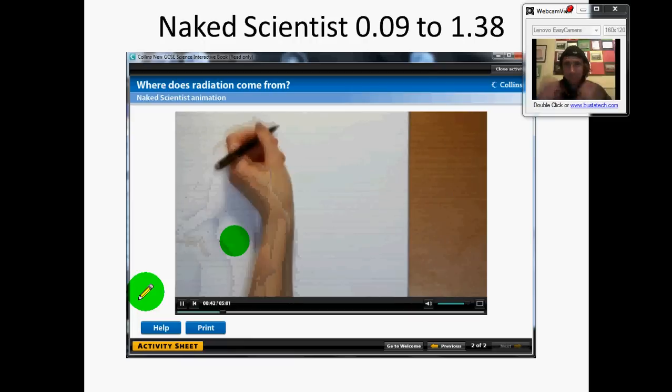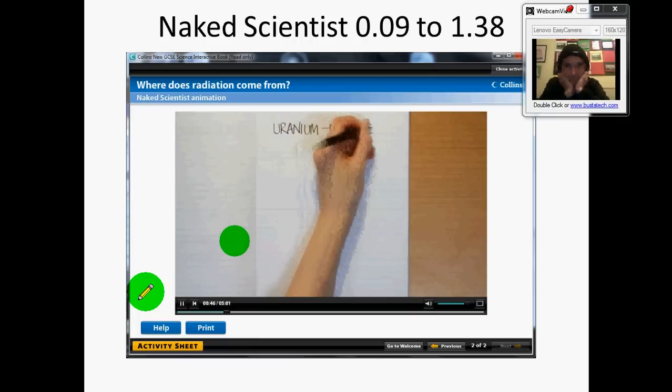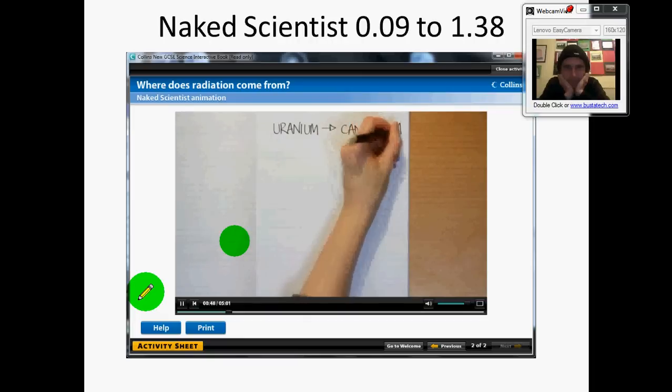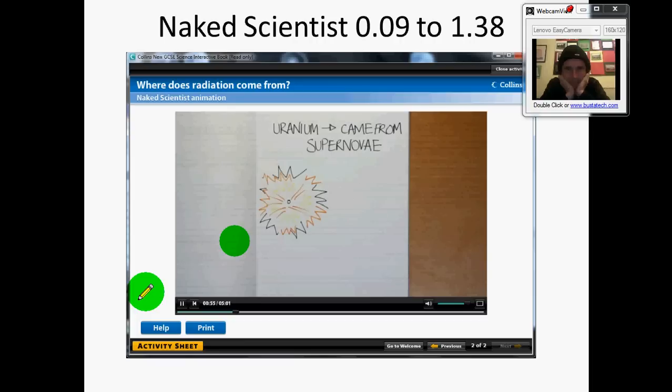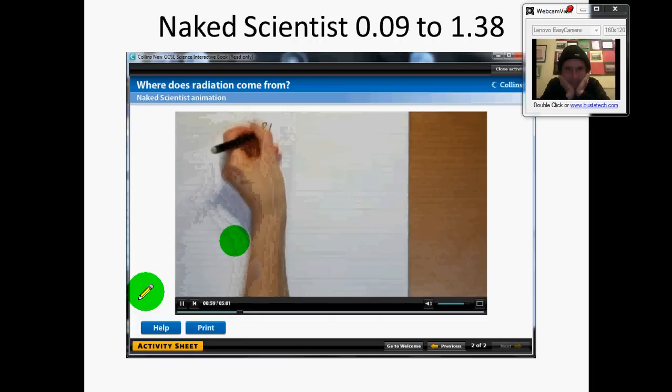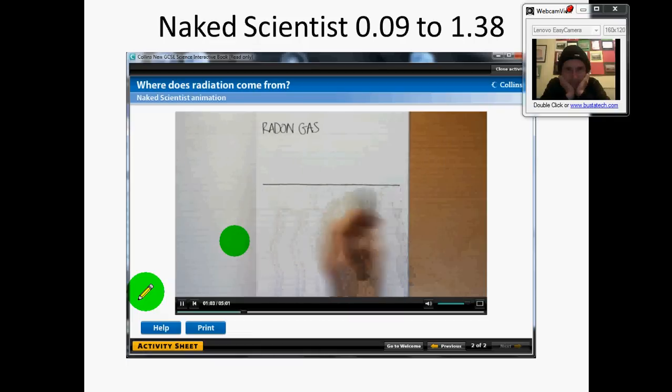Some of these elements like uranium have been around since the earth was formed. They were made originally when giant stars exploded at the end of their lives. These events which are called supernovae are sufficiently powerful to fuse together lighter elements to make large heavier elements. Some radioactive elements are themselves the product of other radioactive substances decaying like radon gas which is produced naturally by the radioactive decay of uranium.